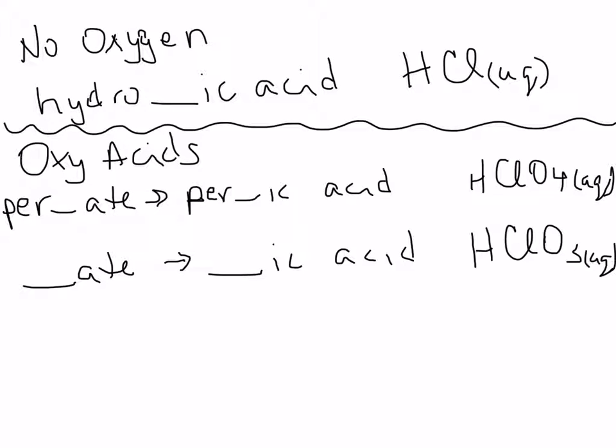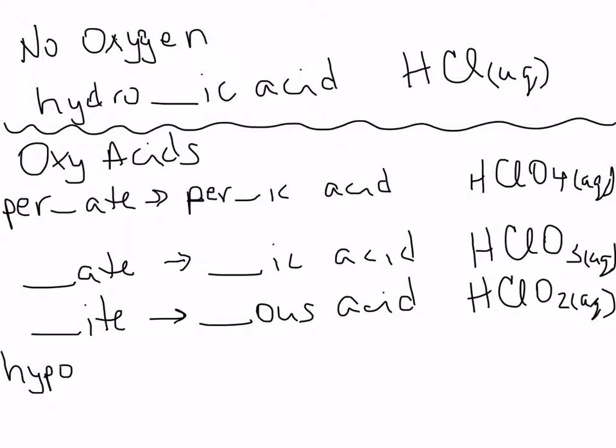So if I go back to the -ate ion, and I make it the -ite ion, I get the -ous acid. HClO2 aqueous. So I would have HClO2 aqueous. So the hypochlorous acid would be HClO aqueous.